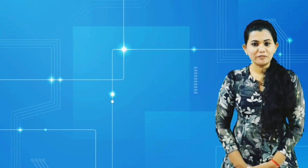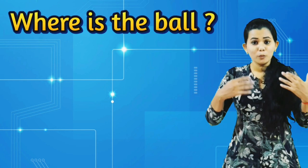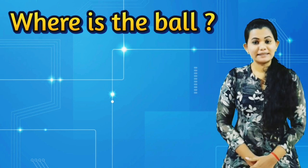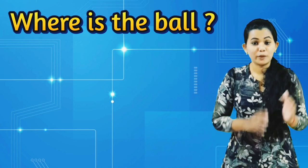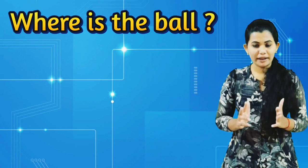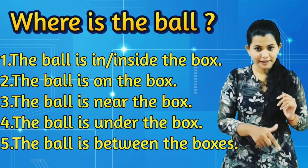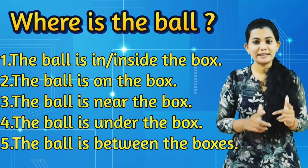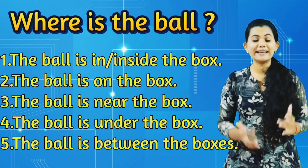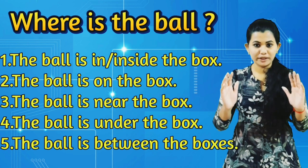How are you able to identify the position of the words? Where is the ball? By seeing the position where the ball lies, we were able to identify that the ball is in or inside the box, the ball is on the box, the ball is near the box, the ball is under the box, or the ball is between the boxes.